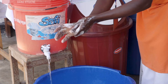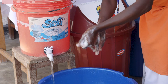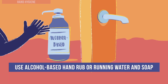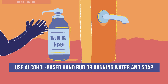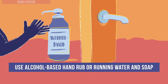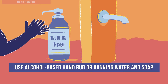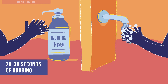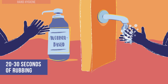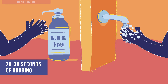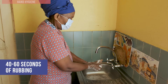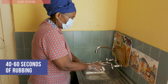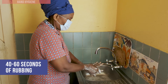The best way to prevent the spread of germs is through good hand hygiene practices. If your hands are not visibly soiled, you can use alcohol-based hand rub, which is preferable in a health setting. When your hands are visibly soiled or if alcohol rub is not available, use running water and soap. When using alcohol-based hand rub, rub your hands for 20 to 30 seconds. Using soap and water requires rubbing for 40 to 60 seconds. Rubbing should include in between fingers, thumbs, and the back of hands.